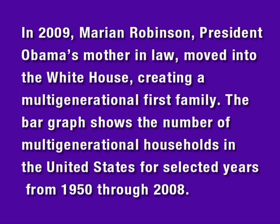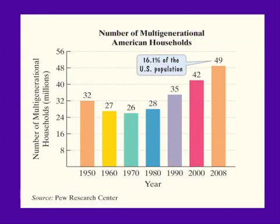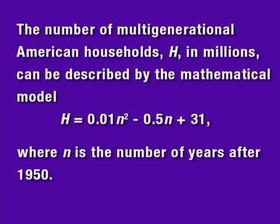The bar graph shows the number of multi-generational households in the United States for selected years from 1950 through 2008. Notice that we have the year along the horizontal axis, and along the vertical axis we're looking at the number of multi-generational households in millions.